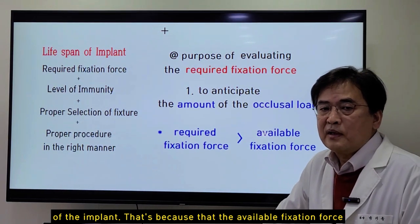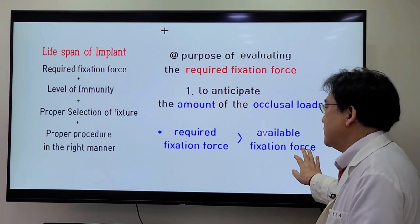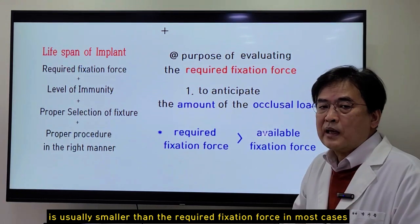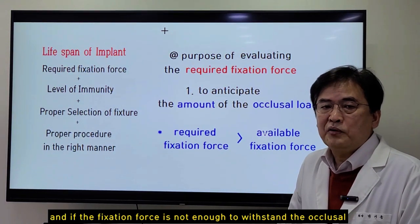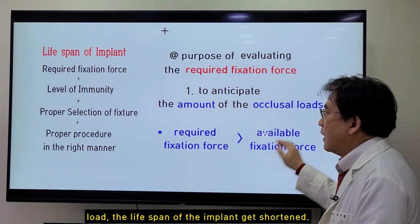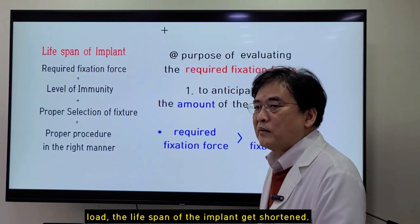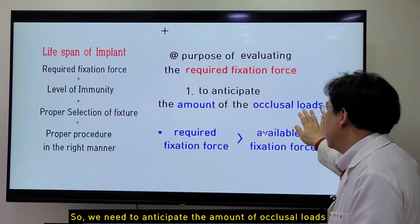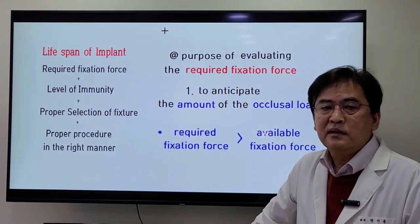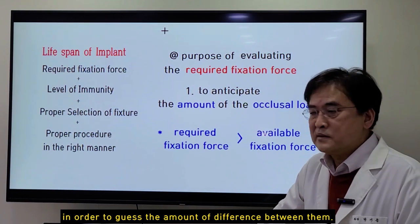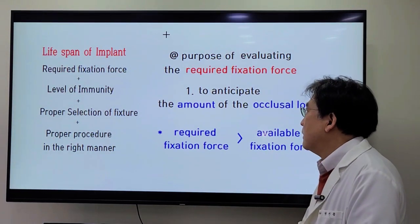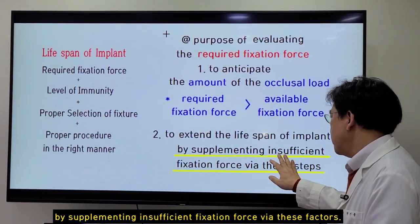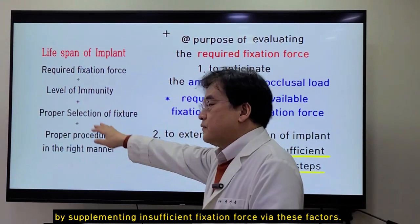The available fixation force is usually smaller than the required fixation force in most cases. And if the fixation force is not enough to withstand the occlusal load, the lifespan of implant gets shortened. So we need to anticipate the amount of occlusal load that will be acting at the implant to be planted, in order to estimate the amount of difference between them. Eventually, we can prolong the lifespan of implant by supplementing insufficient fixation force via these factors.